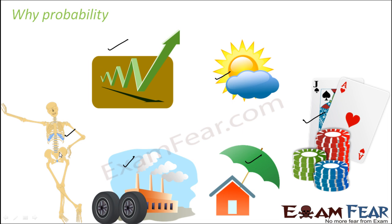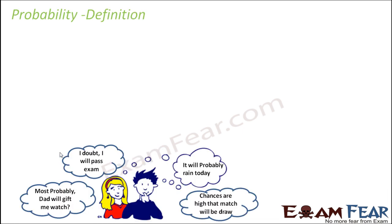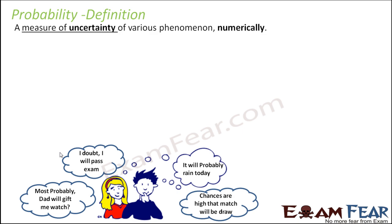Probability is a really interesting topic. If you understand it, it is pretty easy — people think probability is a nightmare, but please pay attention to this chapter. Let us define probability. Probability is nothing but a measure of uncertainty of various phenomena, and that is a numerical representation of that uncertainty.